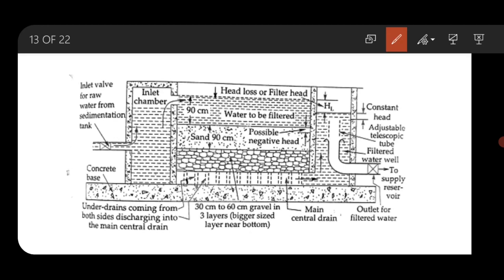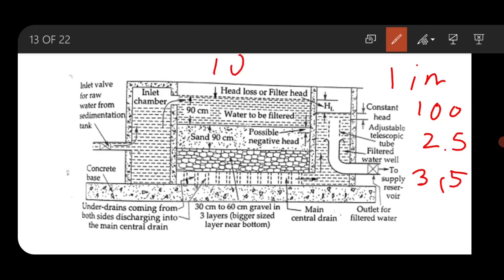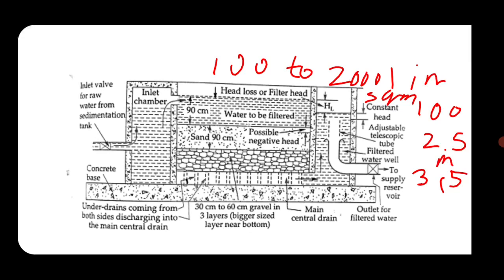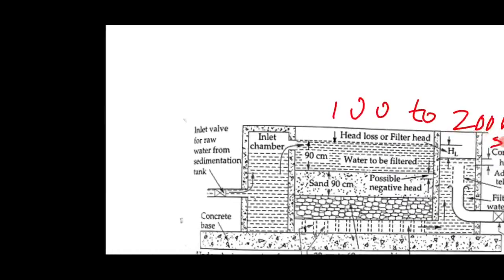The bed slope of the enclosure tank is kept at about 1 in 100. The depth of the tank varies from 2.5 to 3.5 meters, and the plan area of the tank varies from 100 to 2,000 square meters.